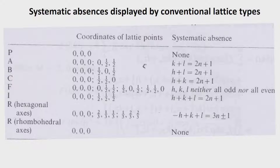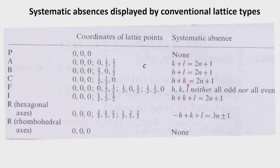Systematic absences come up with the centering. If there is an A centering, the systematic absences come in terms of the values which add on to the axis. Whichever axis to which the half adds on, those axes will show the systematic absences. So we get K plus L equals 2N+1 for the A centering, H plus L equals 2N+1 for B centering, and H plus K equals 2N+1 for C centering.